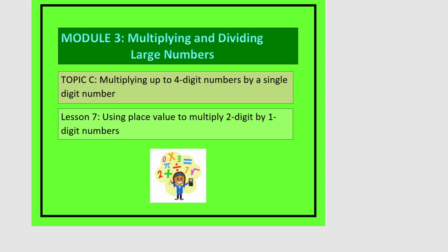This is lesson 7 in module 3. In this lesson we're going to be using place value to multiply a 2-digit by 1-digit number.